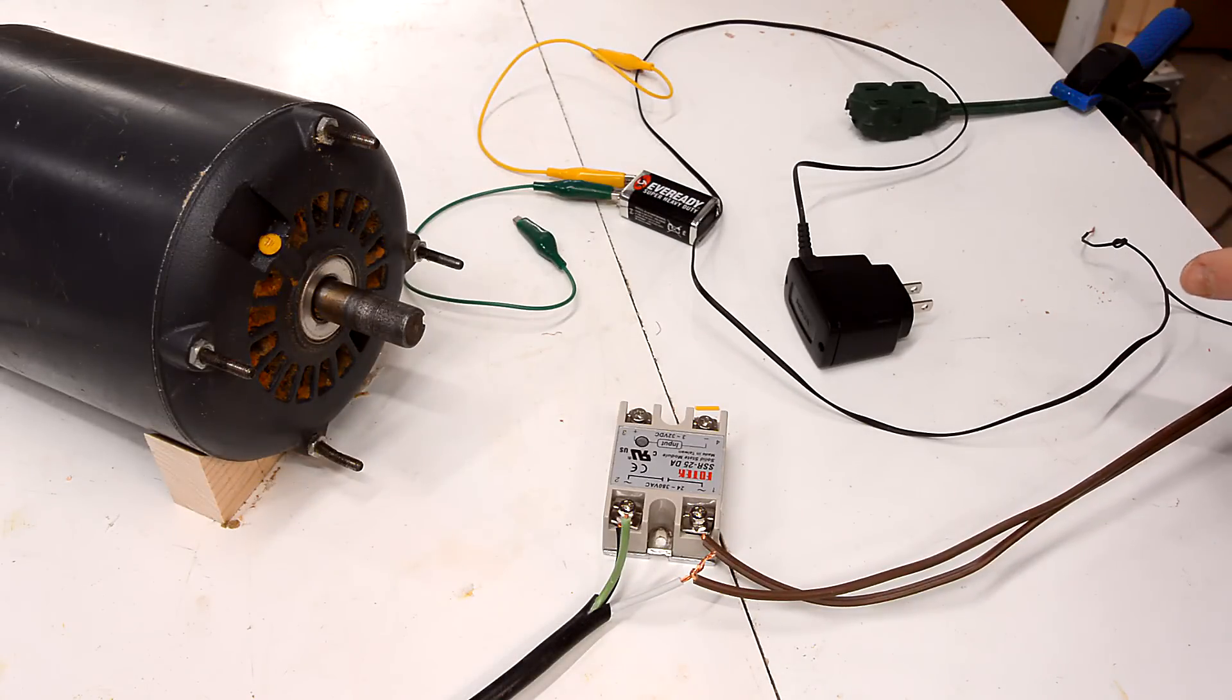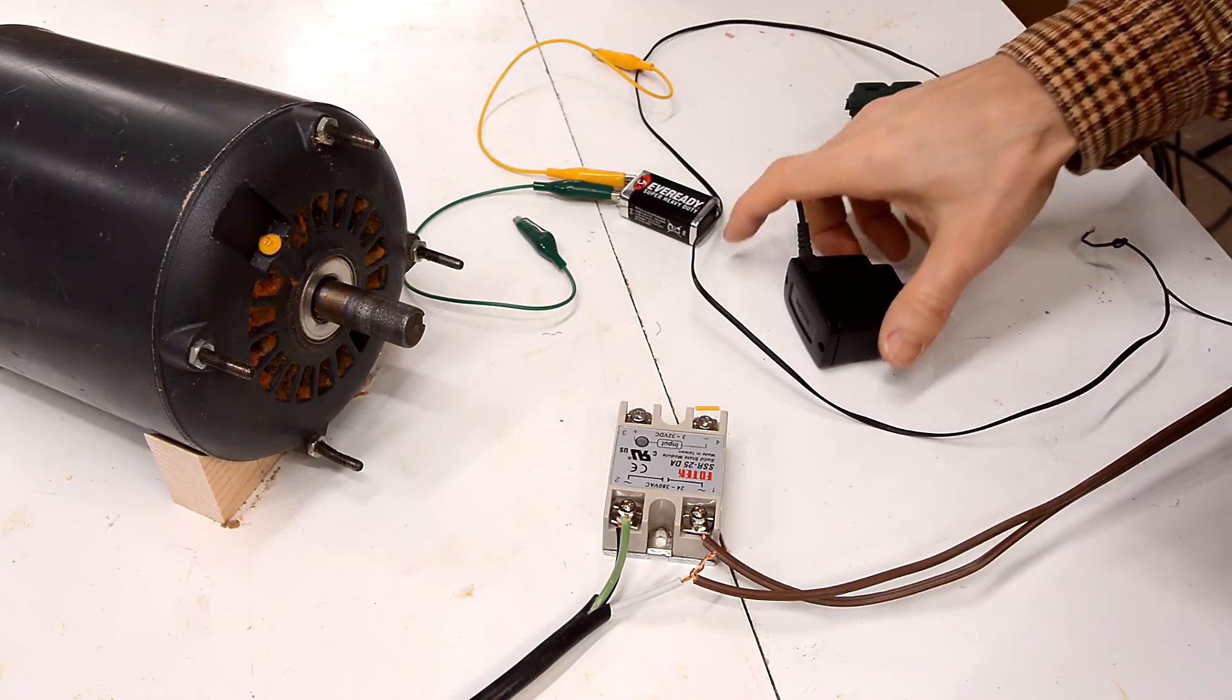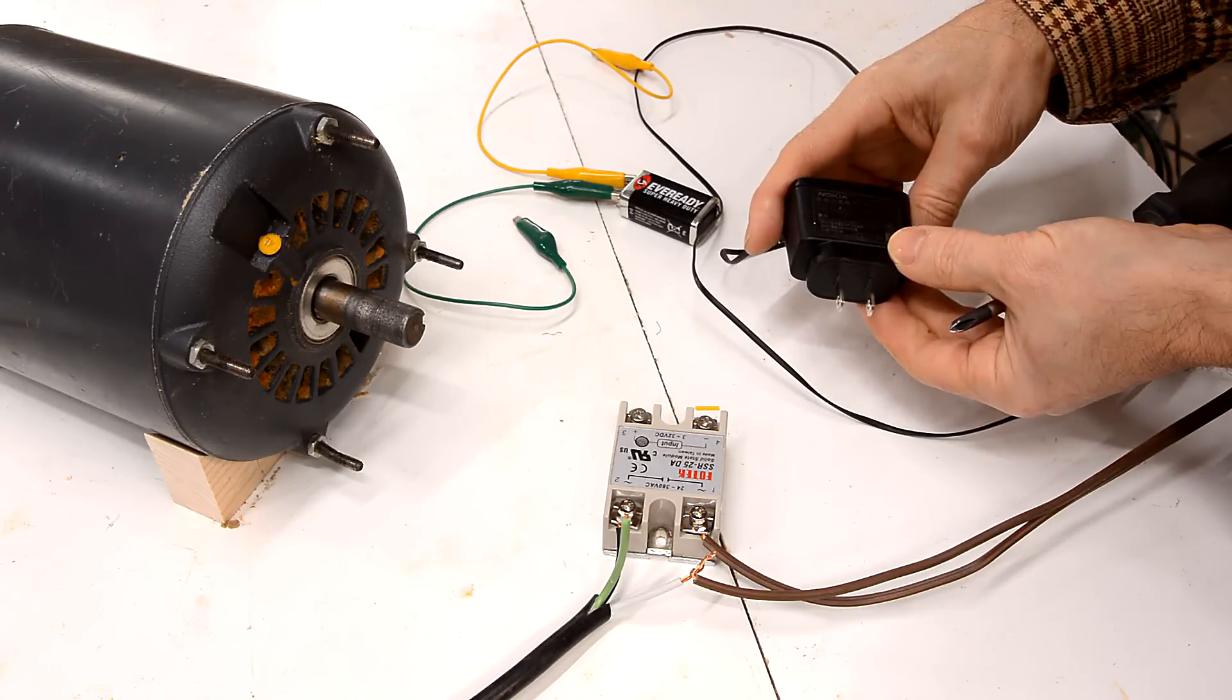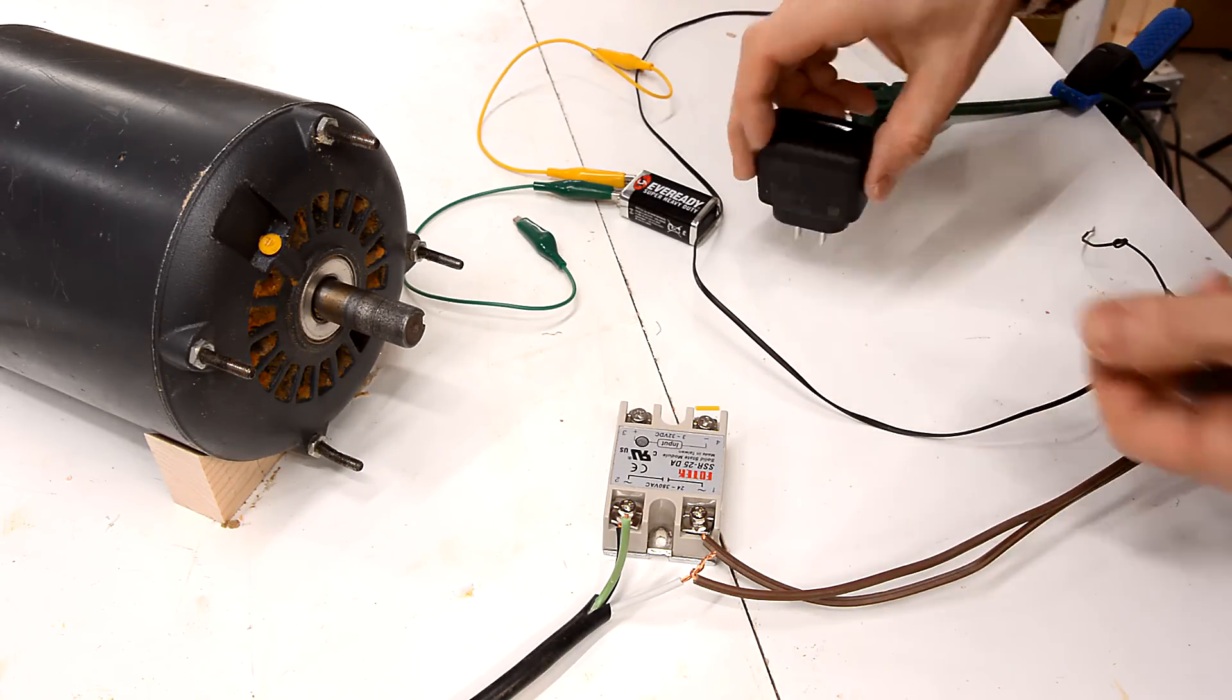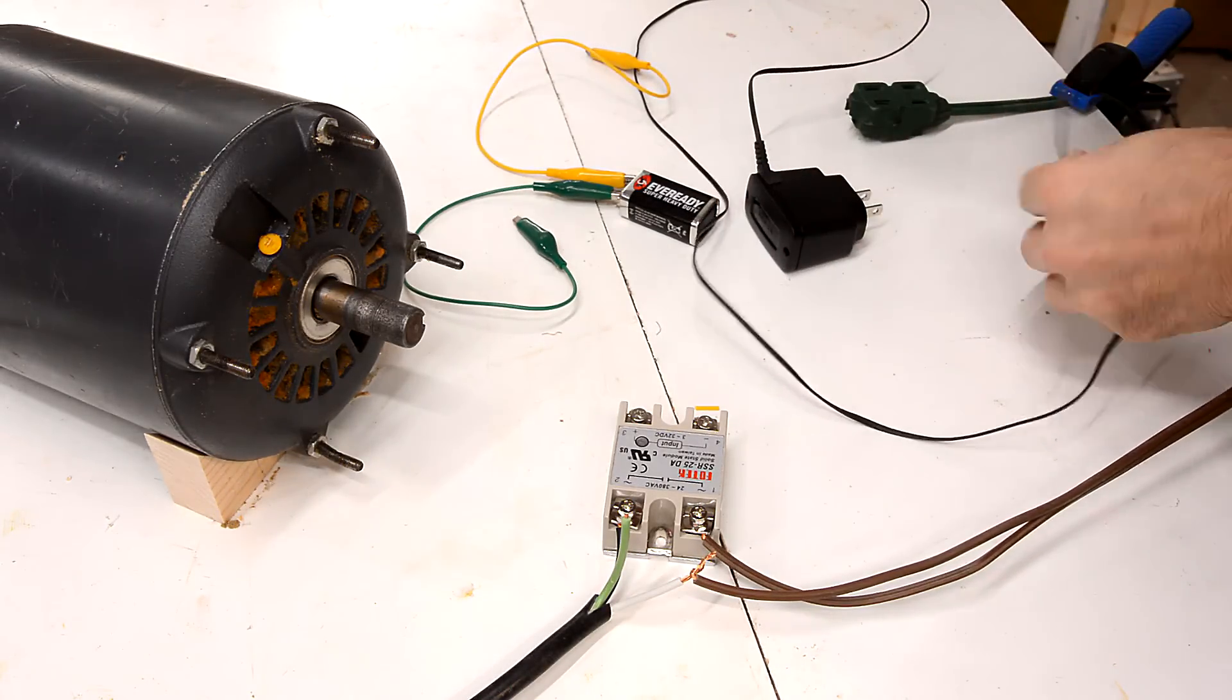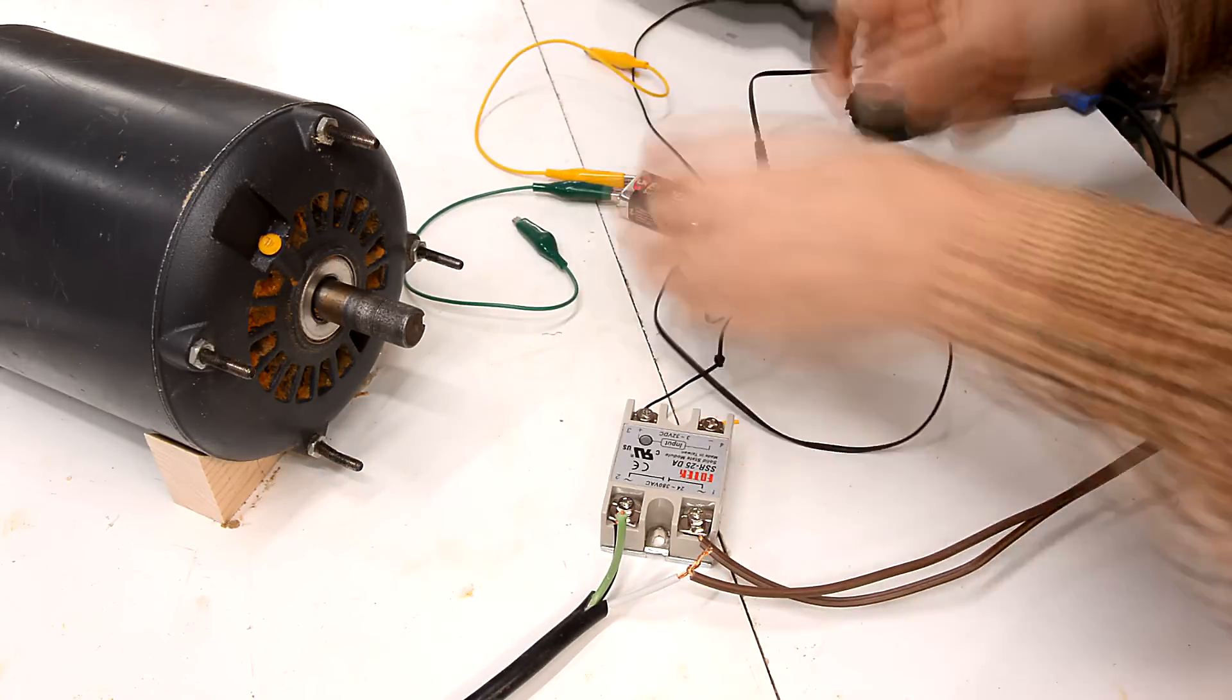Now I need to actually trigger this off of 240 volts from the table saw. And for that I'm going to use this old cell phone power adapter which can take up to 240 volts because it also works in Europe. So I'll just hook that one up to the relay.